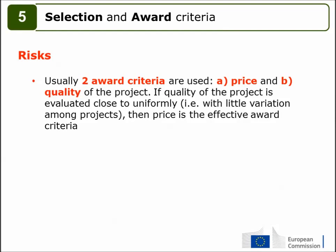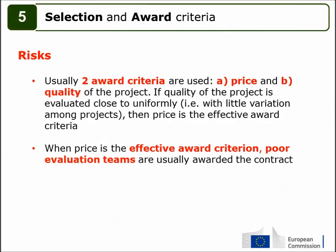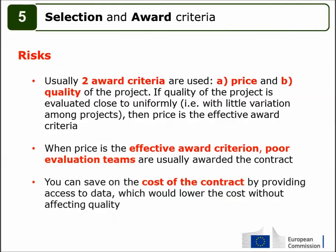Usually two award criteria are used: price and quality of the project. If quality of the project is evaluated close to uniformly, with little variation among projects, then price becomes the effective award criterion. If the quality of projects cannot be correctly evaluated because of a lack of information or insufficient knowledge of CIE methods, price will then be the effective award criterion. In this case, the team offering the cheapest project is usually the one awarded the contract, but this tends to result in evaluations of worse quality.